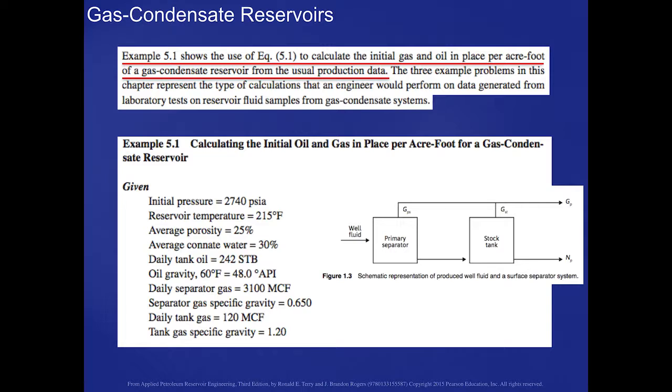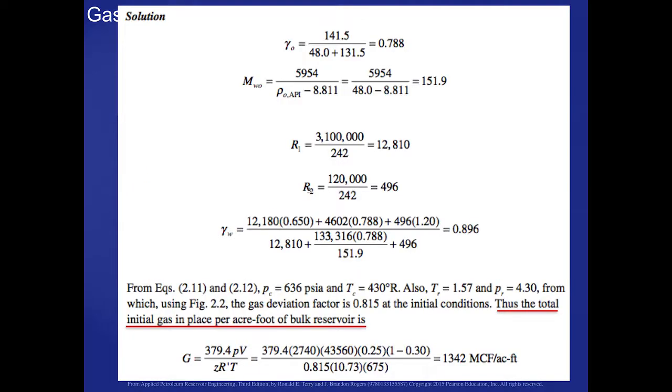Let's take a look at example 5.1. It shows the use of this equation to calculate the initial gas and oil in place on a per acre-foot basis of a gas condensate reservoir. In example 5.1, we're given the initial data that's presented on this slide. We're going to look at a two-phase separation system. The specific gravity of the oil can be calculated here, the molecular weight of the oil, the R sub 1 and R sub 3s, the producing gas oil ratios, calculated from the data that are given in the initial problem statement. Then we can calculate the specific gravity of the well fluid. It turns out to be 0.896.